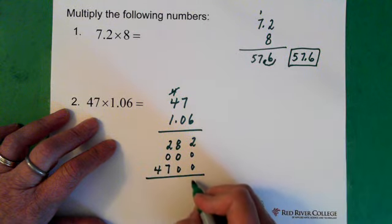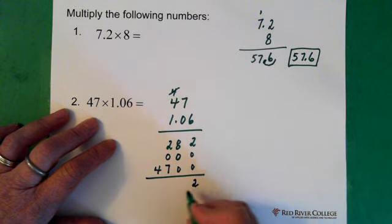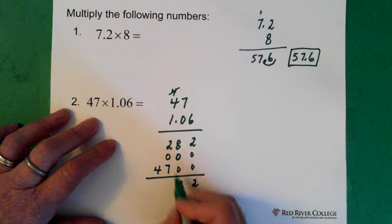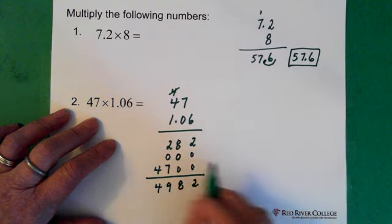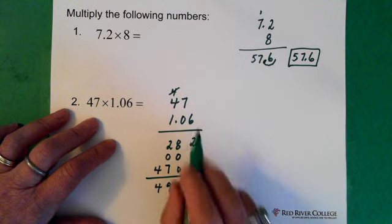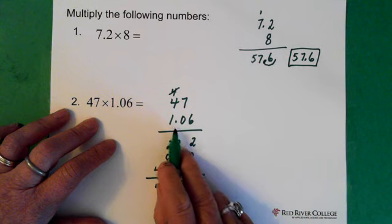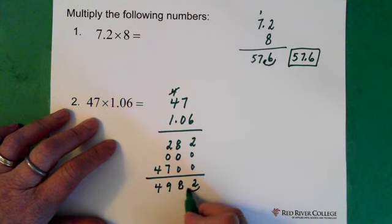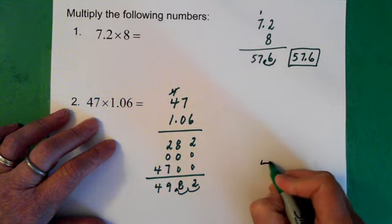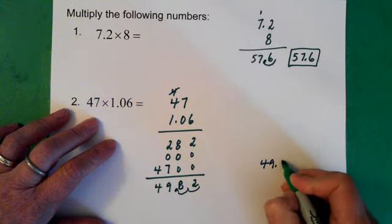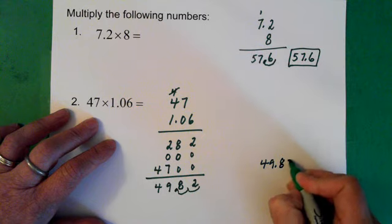So now we add up our numbers. We end up with 2 here, 8, this is a 9 and there's a 4. Now we go back to our original numbers and count the number of decimal places. We see there's 2, so then we move the decimal 2 to the left here and we end up with 49.82.